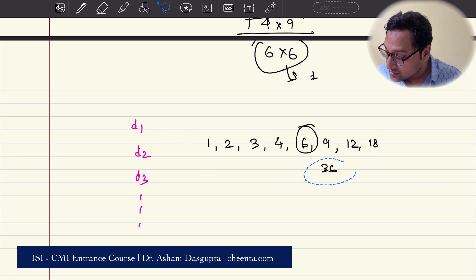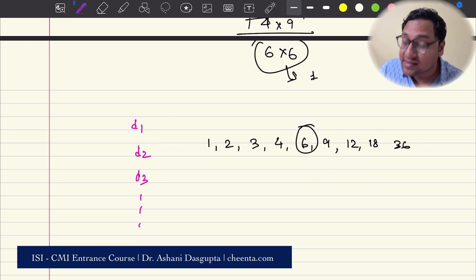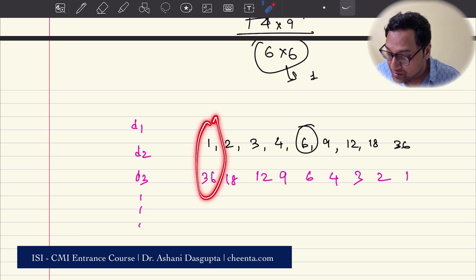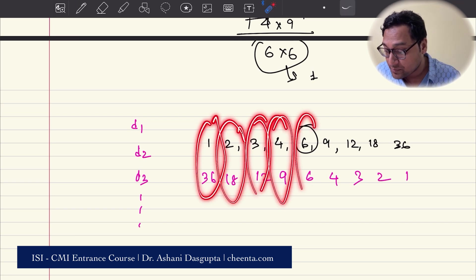I will write the example and it will be very clear to you. If I write this and now if I write this in the decreasing order, 36, 18, 12, 9, 6, 4, 3, 2, 1. So see there, automatically paired. Automatically paired.